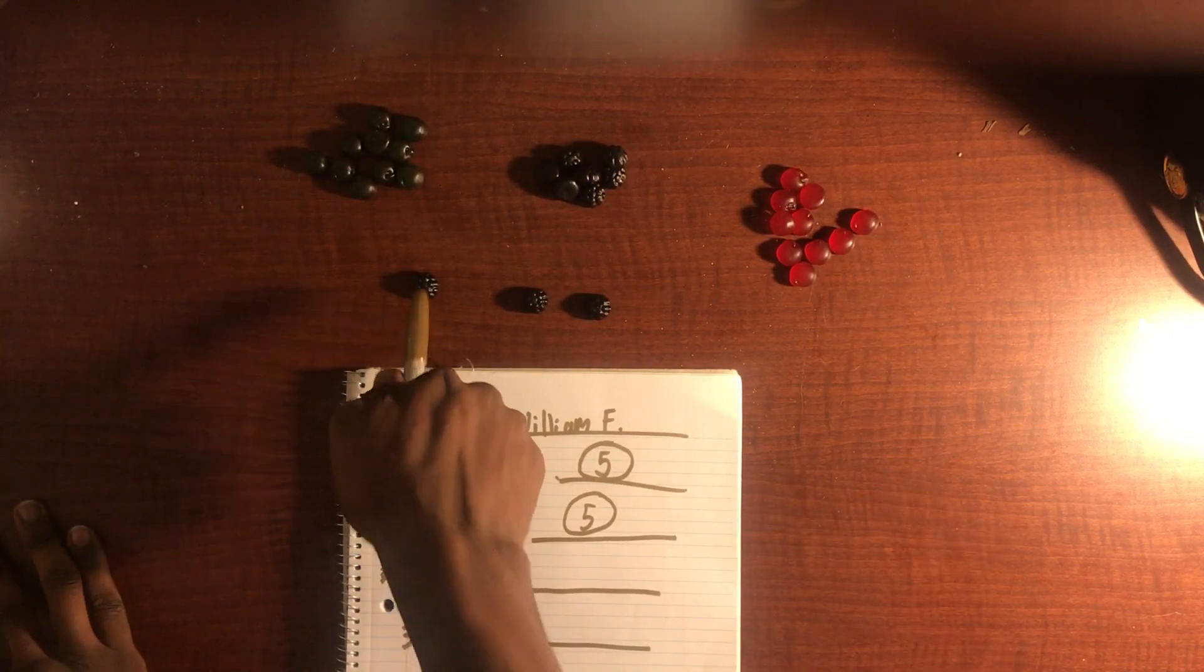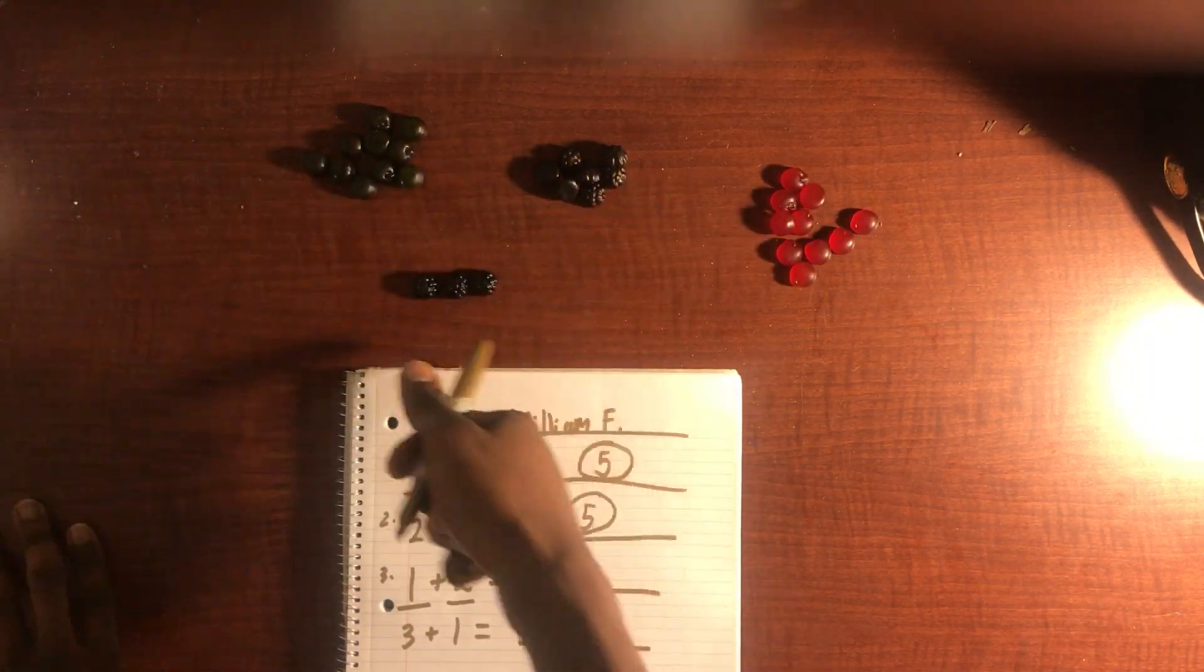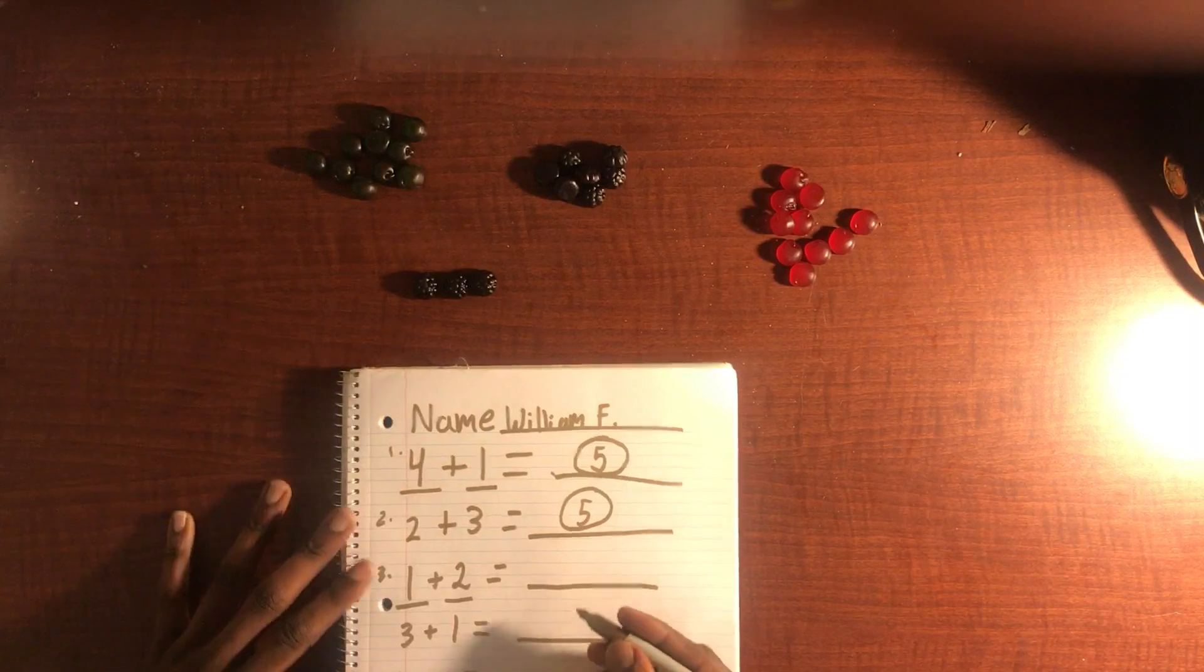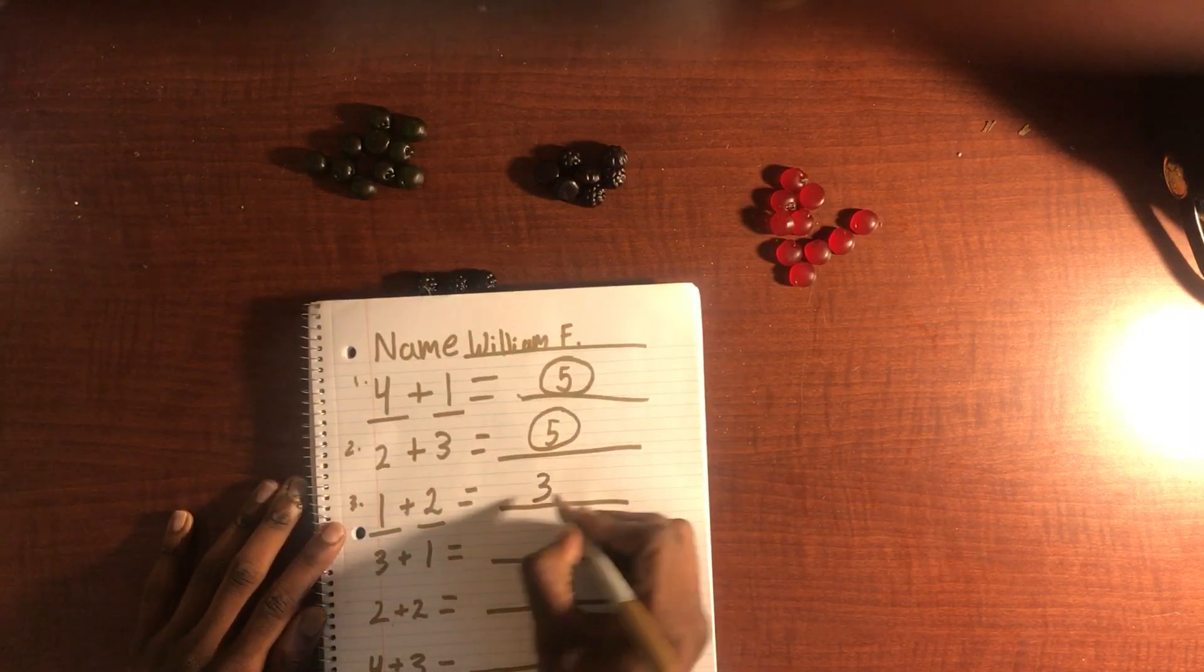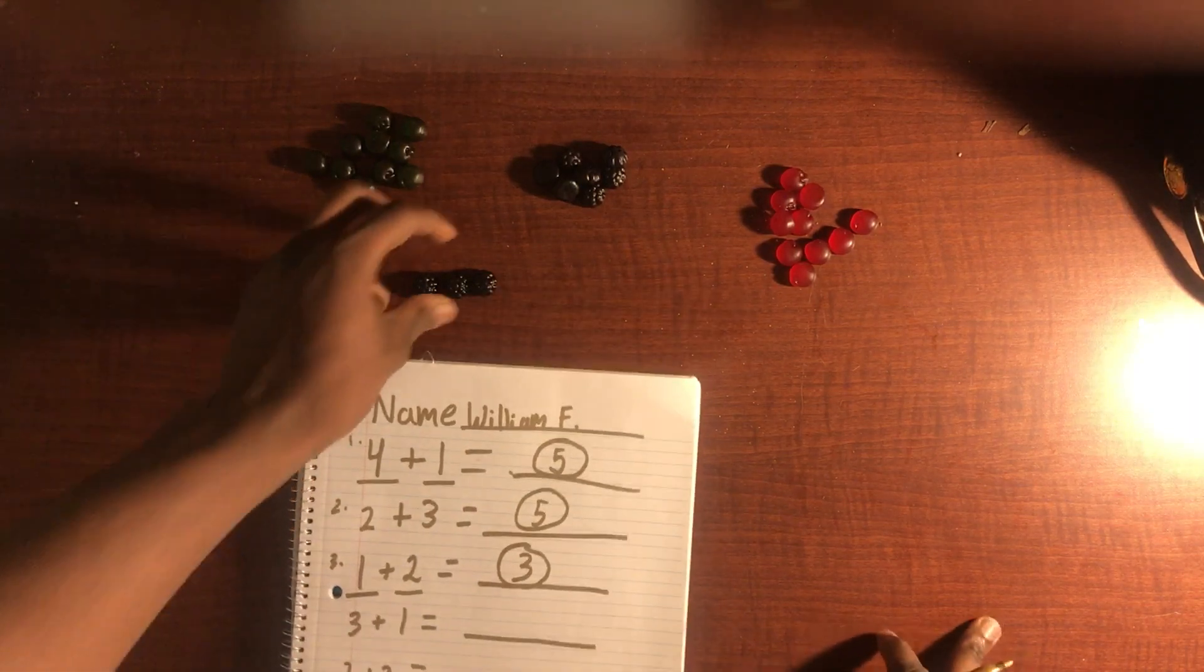So we have our original black gummy here, and then we're going to add two to the collection of our originals. And now we have a total of three. Now we have a total of three black gummies.